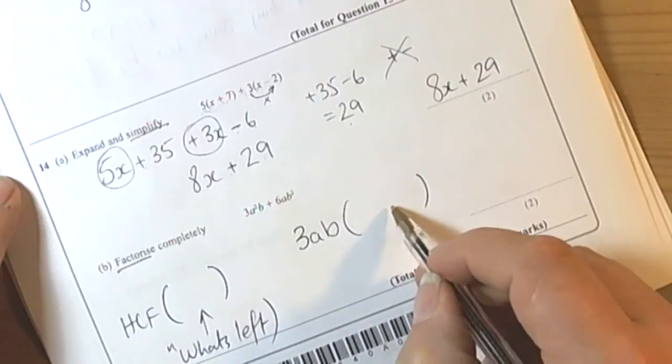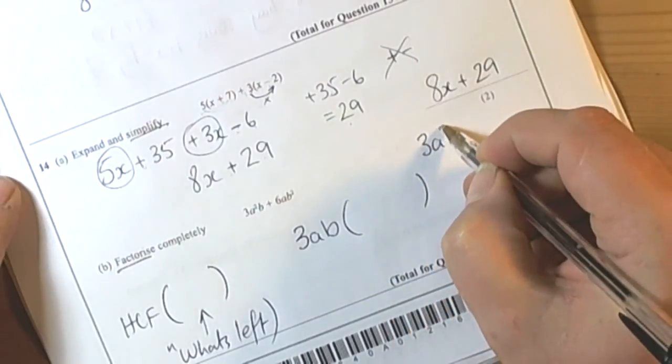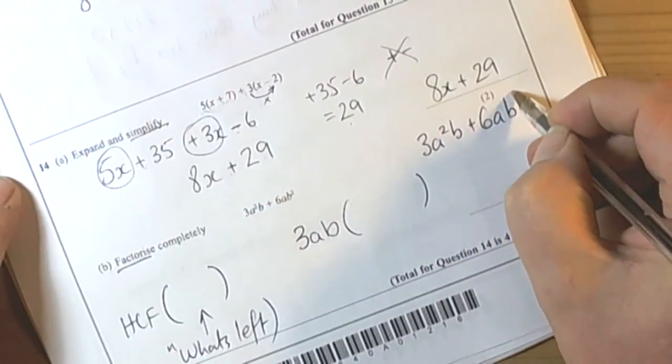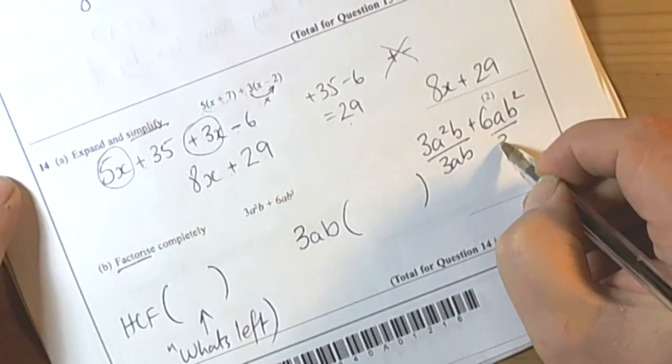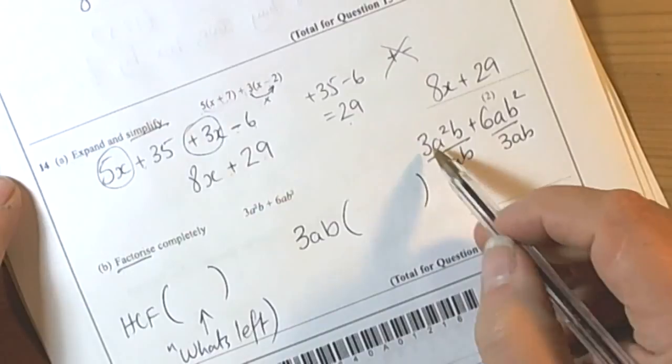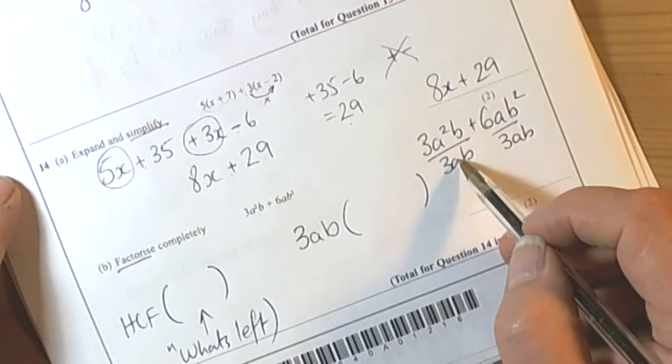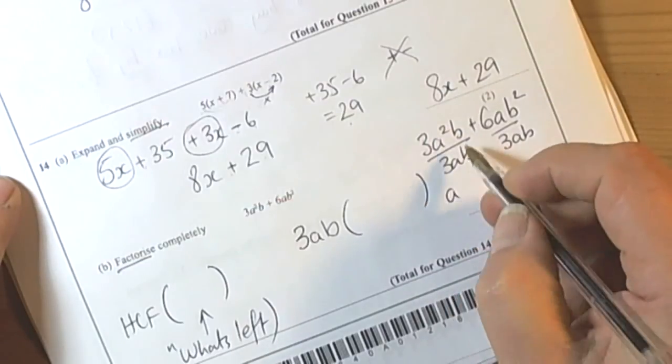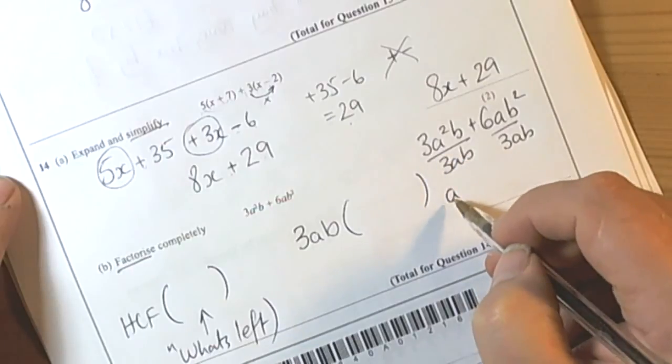So we need to find out what's left to go inside the bracket. One way to do this is to take the terms in the original expression and divide each of them by what we think is the highest common factor, and then what we get from that answer goes inside the bracket. So we've got 3 divided by 3 which is 1, we've got a² divided by a which means we're going to leave ourselves with an a, and then we've got b divided by b which cancels to 1, so we've got a times 1 which is just a.